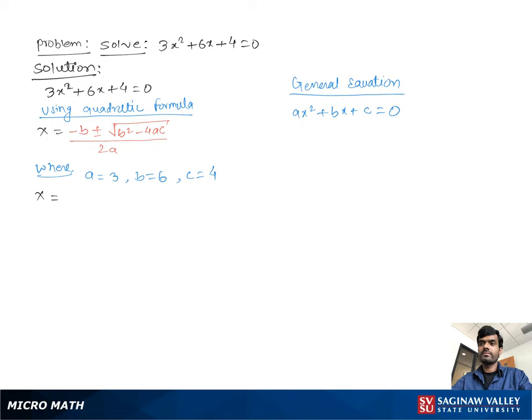Now comparing the original equation with general equation, we get a equal to 3, b equal to 6 and c equal to 4. Now substituting this value in the quadratic formula.